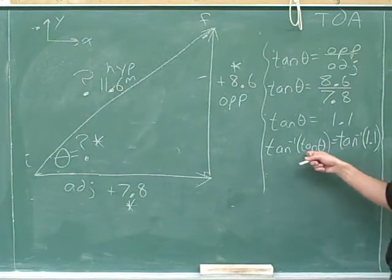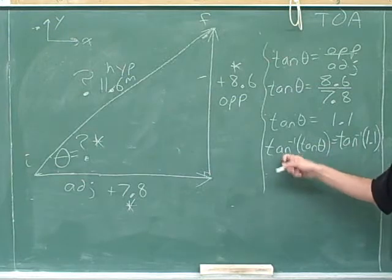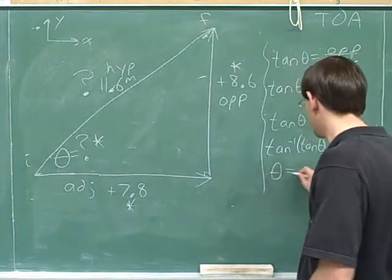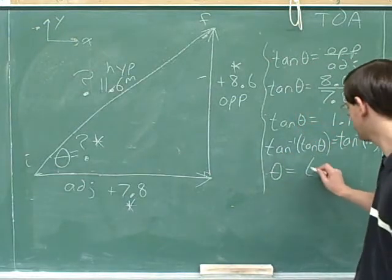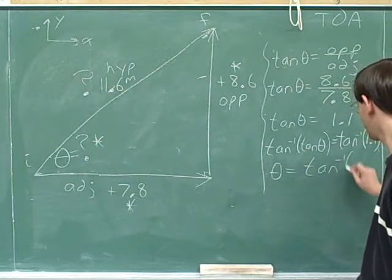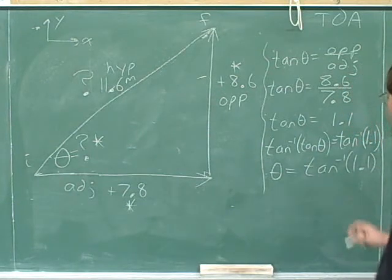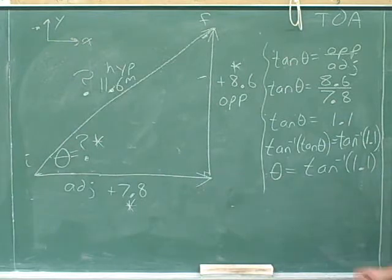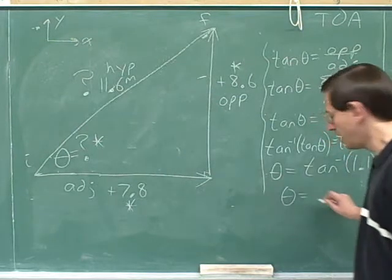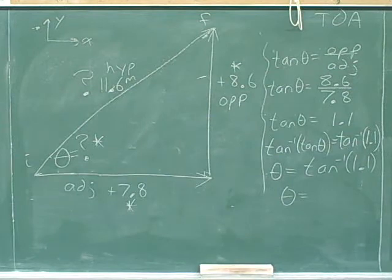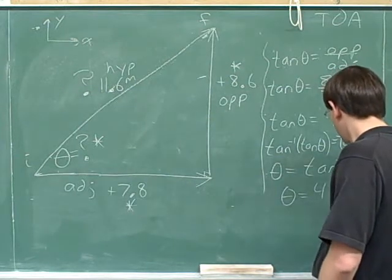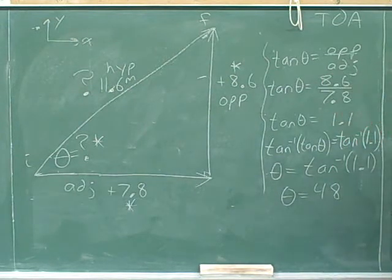If you start with theta, and you take the tangent, and then you do the opposite and take the inverse tangent, you just go back to theta. That was the whole point of taking the inverse tangent. So we just have to evaluate the inverse tangent of 1.1 on our calculator. And that should come out to be approximately 48 degrees. I think 47.7, but maybe I'll round that off to 48 degrees.